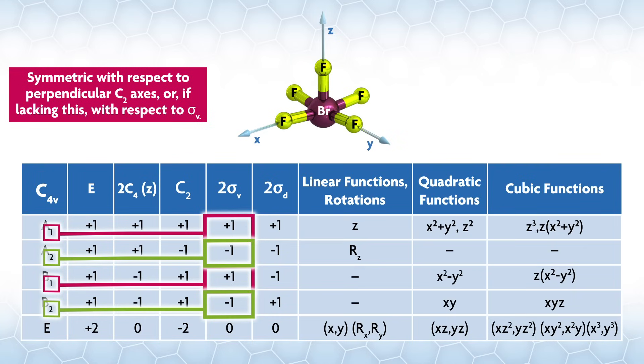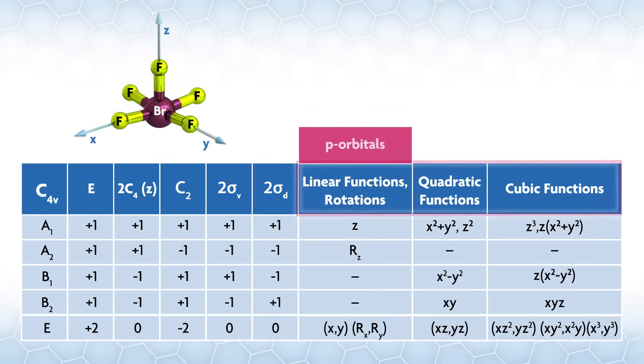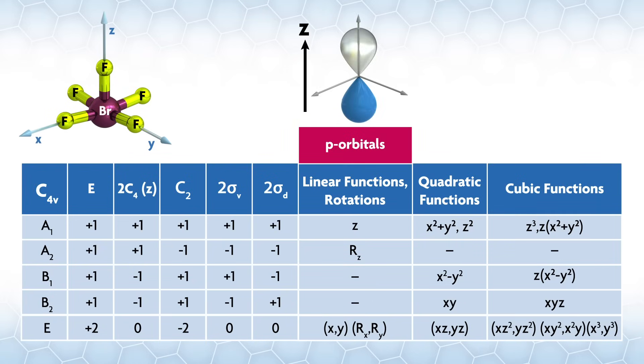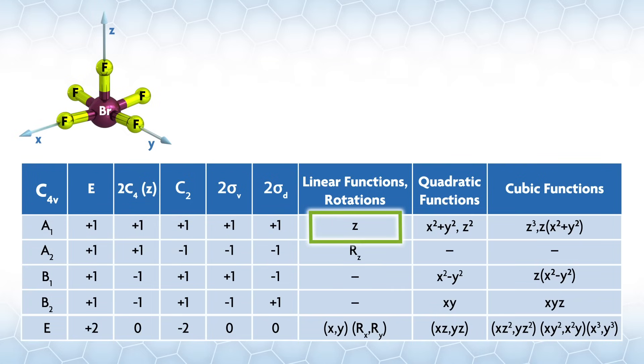If the atom you're looking at resides at the central point where all the operations meet, like Br in our example, you can look to the right of the irreducible representations to see the symmetries of those orbitals. The p orbitals have the same symmetry as linear functions, namely they're similar to vectors along the axis directions, with a positive and negative phase. The d orbitals are quadratic functions, and the f orbitals are cubic. The first irreducible representation has all ones across the different classes and is called the totally symmetric irreducible representation. The s orbital always has the symmetry of this rep.